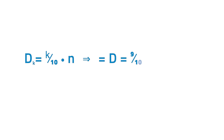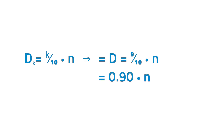Going back to the problem on the ages of grade 10 students, let's determine the score point that gives the highest 10%. The highest 10% is also called the 9th decile. Round up 13.5 to the next integer, which is 14. Therefore, the 9th decile is the 14th value. Thus, D9 = 17.